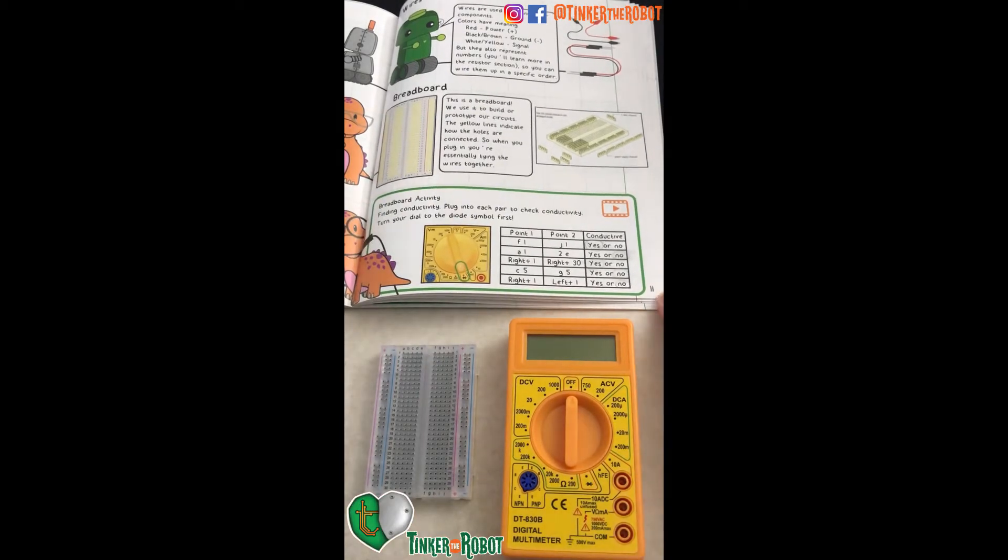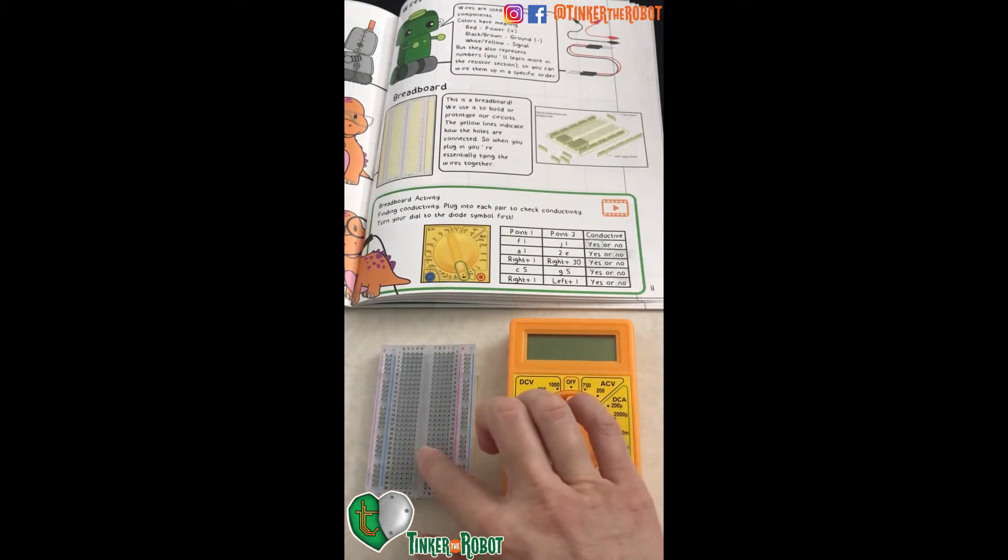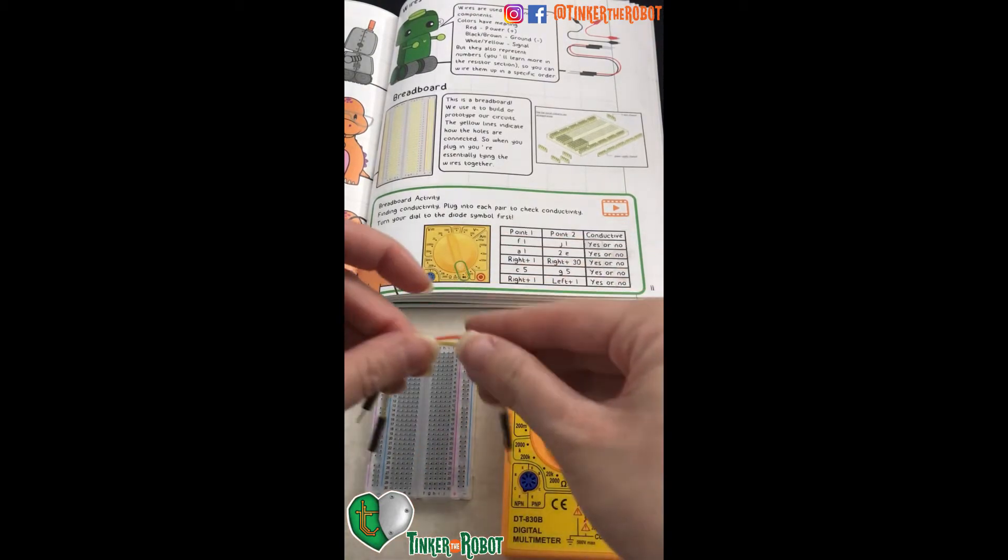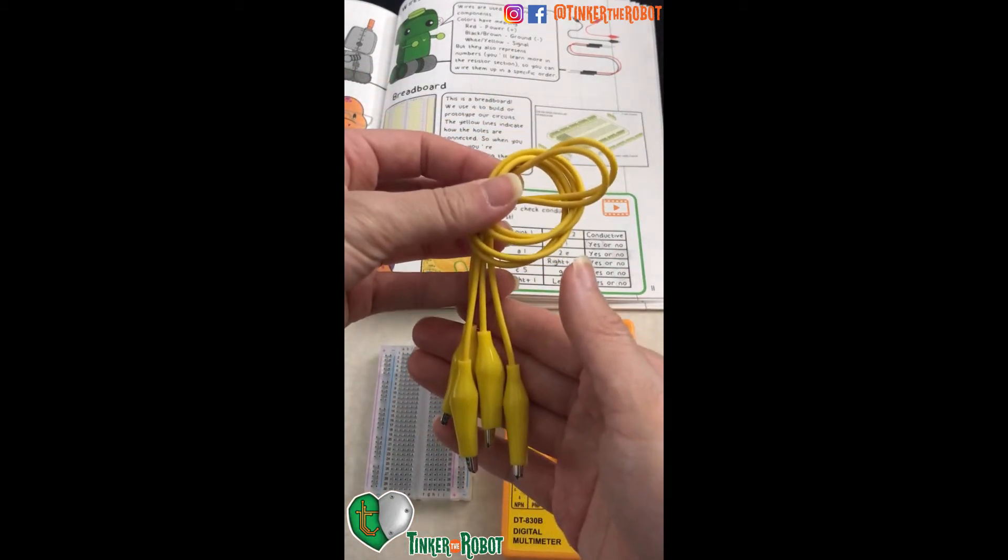Breadboard activity on page 11. You'll need your multimeter, your breadboard, two jumper wires, and your alligator clips.